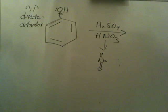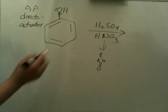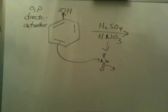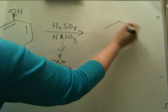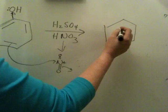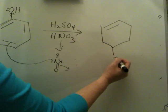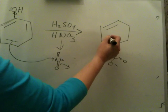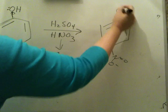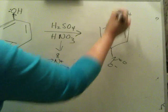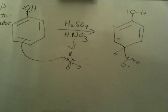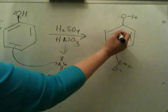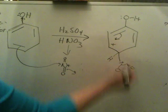And in class we showed how to generate that. So let's look at para-attack. If we do a para-attack like so, we will end up with this intermediate. And we've been practicing a lot drawing resonance forms. So there are actually four resonance forms I can draw for this structure. So I'm going to do that quickly here.